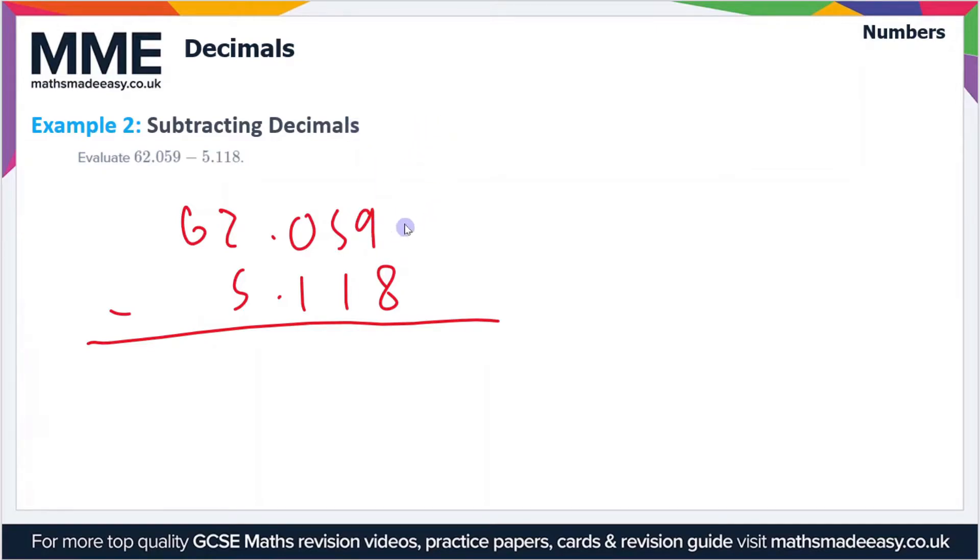First of all, let's look at this column on the right. So 9 minus 8 is 1, 5 minus 1 is 4, 0 minus 1, and we can't do that straight away, so we have to take a digit off this column, turn this 2 into a 1 and turn this 0 into a 10. So 10 minus 1 is 9.